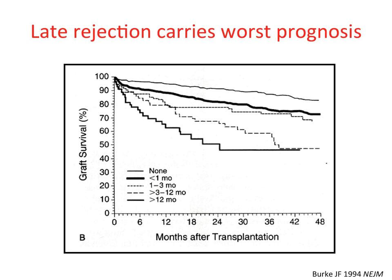The timing of rejection makes a difference. With no rejection episode, graft survival is best. An early rejection episode carries somewhat poorer survival, but a late rejection episode more than 12 months after transplantation carries the poorest prognosis. This is probably because late rejection is associated with non-adherence, and because patients are seen less frequently by that stage, so the delay between onset and diagnosis will be longer.